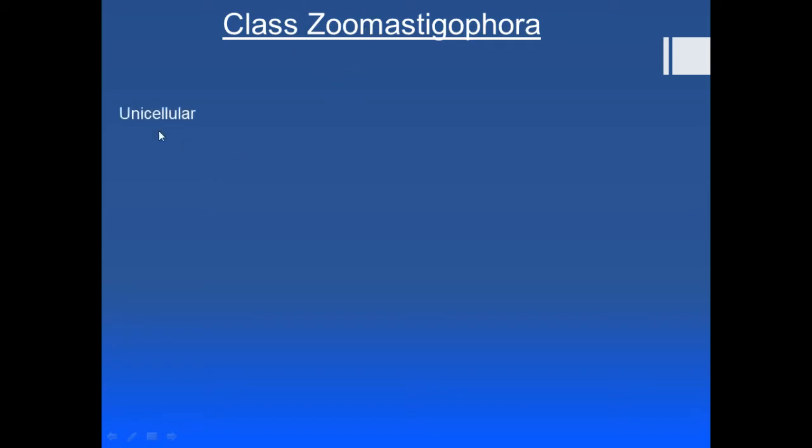Let's start with the general characteristics of the class Zoomastigophora, or flagellates, which will be present in each and every parasite of this class. First, they are unicellular — since they are protozoa, this is expected. Second, they have a spherical or cylindrical shaped body.